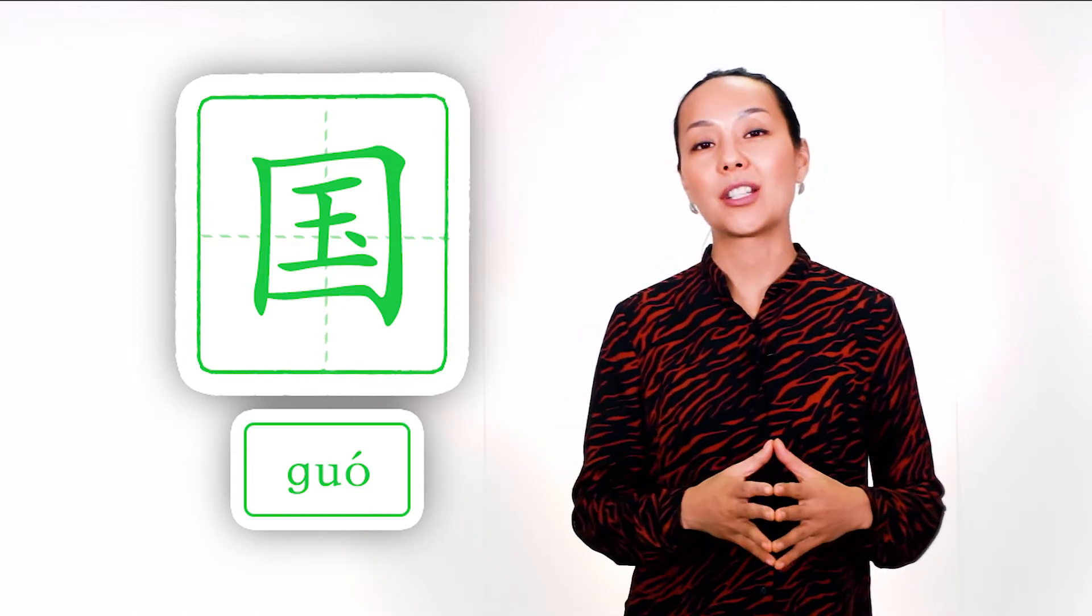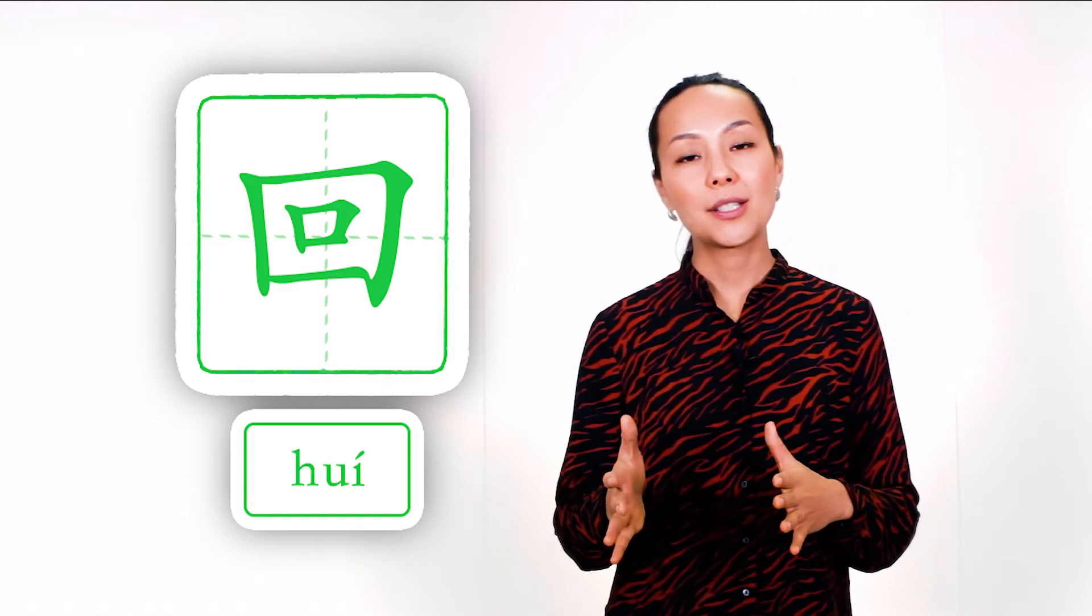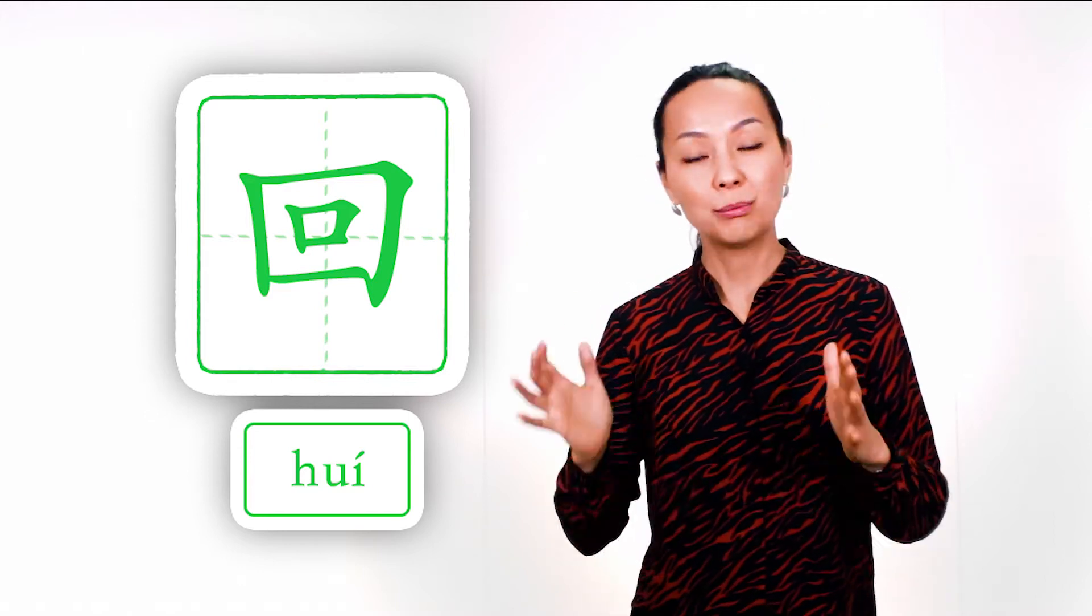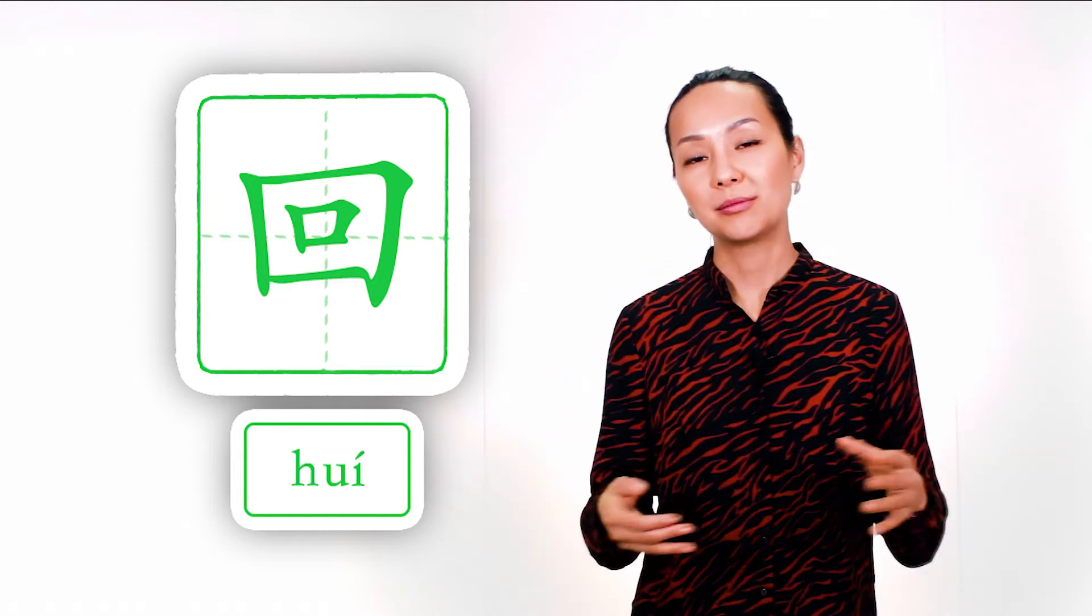The second example is the character to return, huí. And it's a very cool character. I love it a lot. Inside we have mouth and borderlines. They symbolize here a kind of place where we, mouth, return home for example. And it's very easy to explain this character.